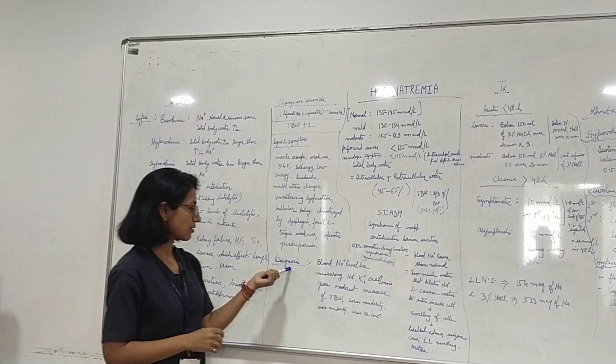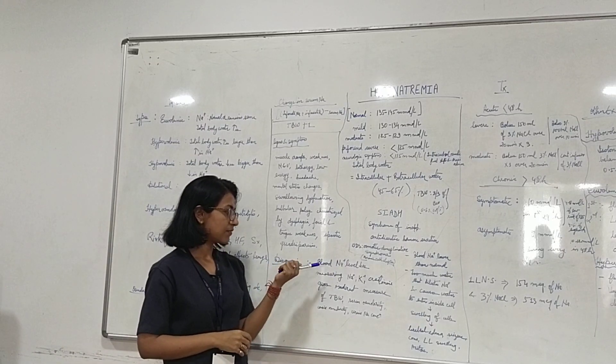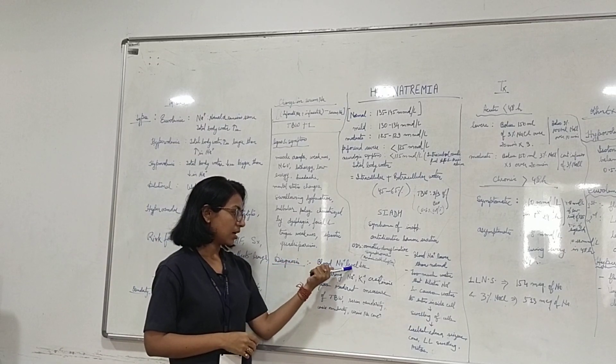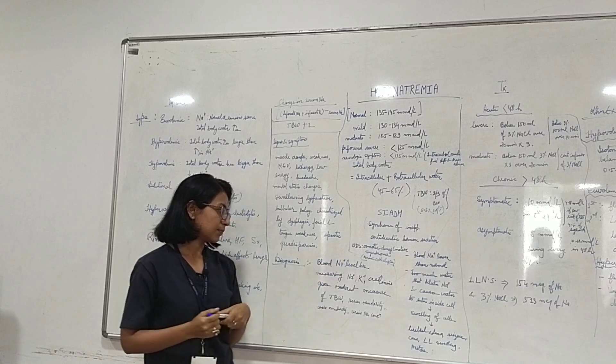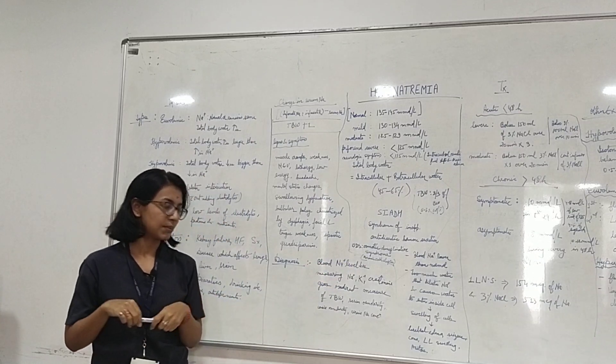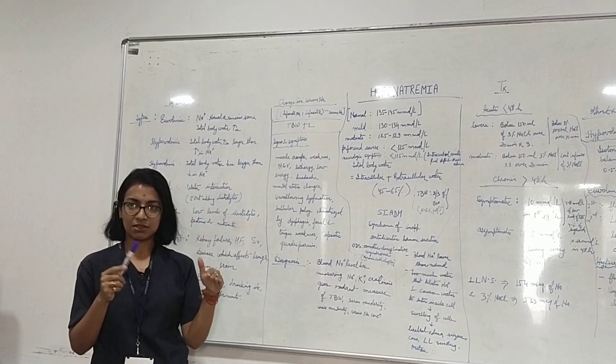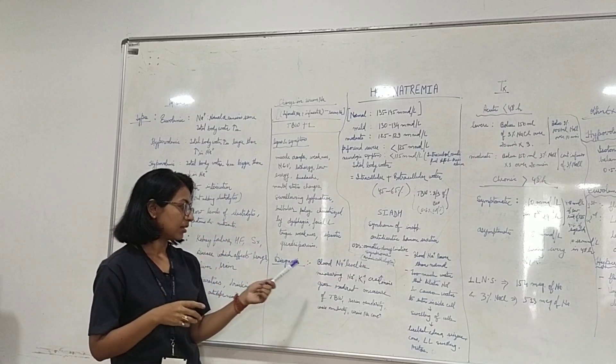Spastic quadriparesis is another sign — a weakening of the limbs that is also affected by the sodium level in the body.